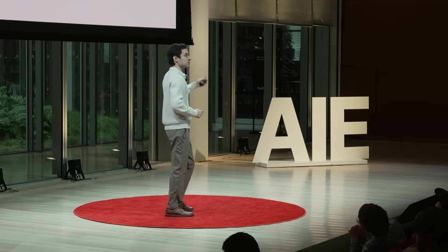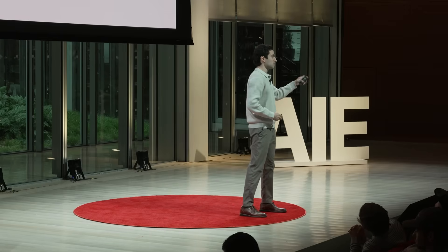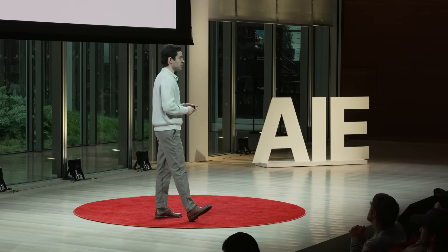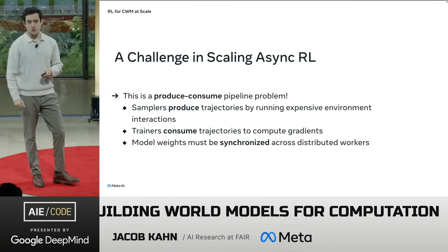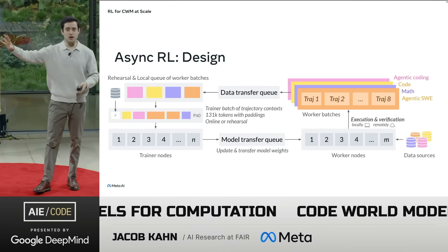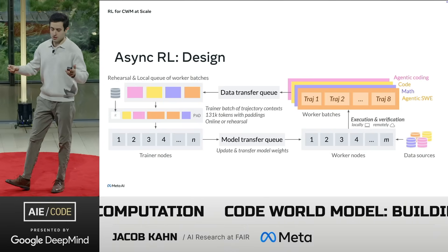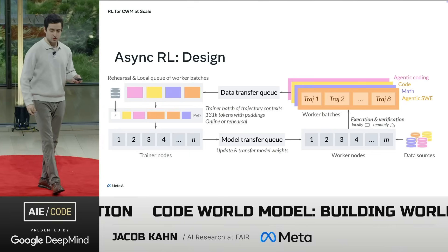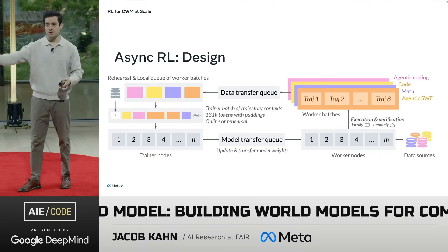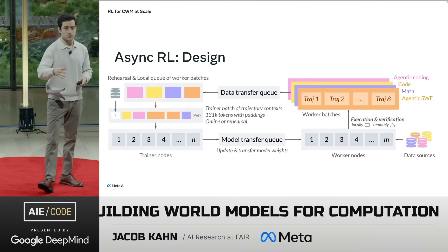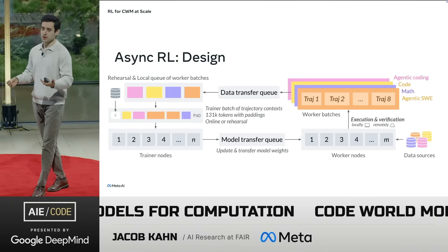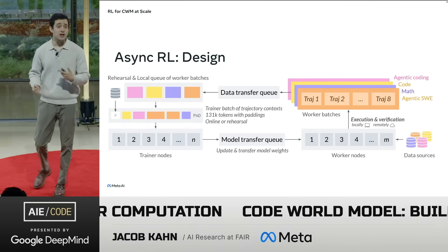The challenge is a produce-consume pipeline problem. Samplers are producing lots of trajectories consumed by trainers; we're executing in the environment and need to synchronize weights. We solve this in CWM with a very asynchronous model: a trainer eagerly sends model checkpoints to samplers, trajectories are sampled and sent back to trainers eagerly, and we use queues — many models queued up for sampling, many trajectories queued to be scored and added via gradients to the trained model. This setup stays relatively on-policy even though it's highly asynchronous, with very few bottlenecks overall.